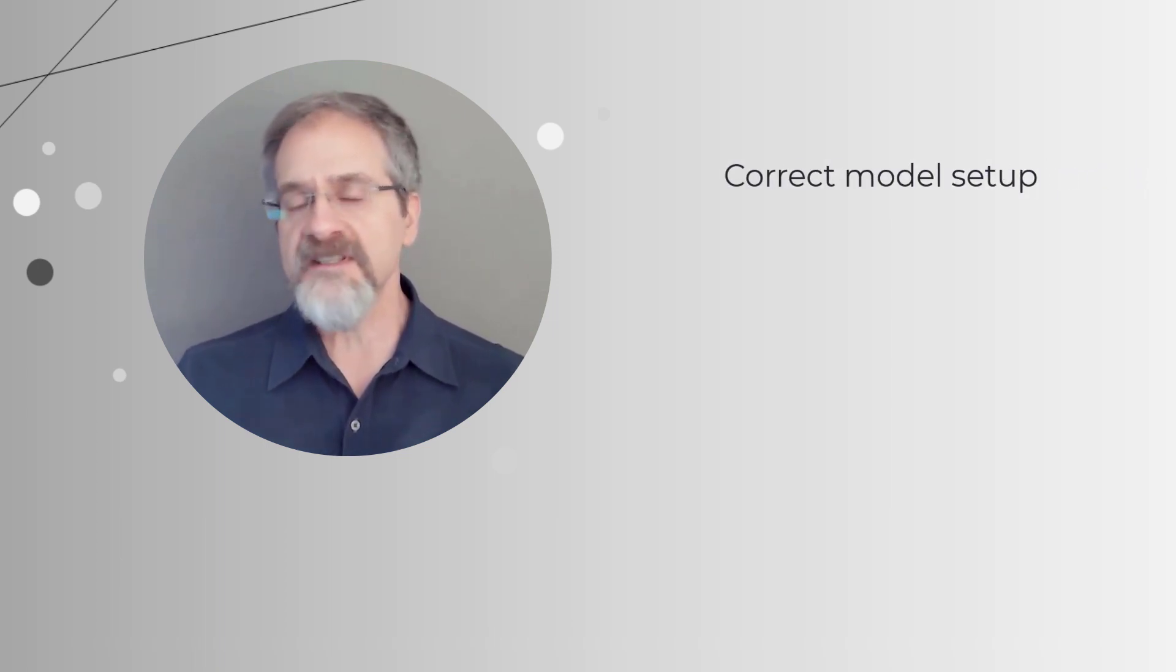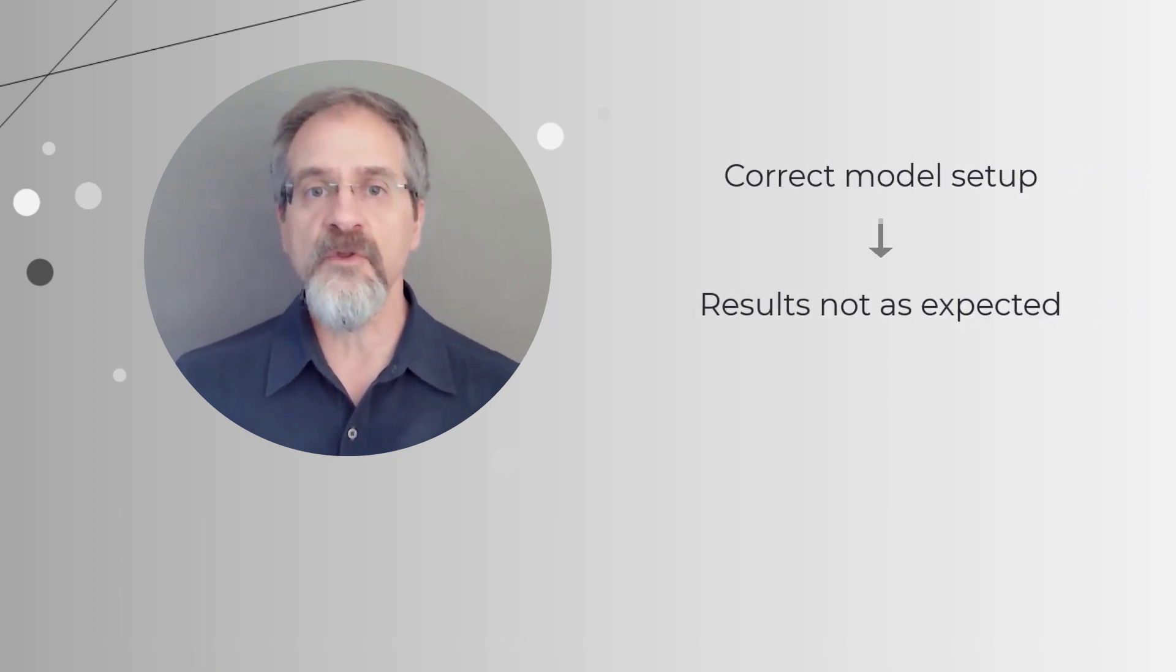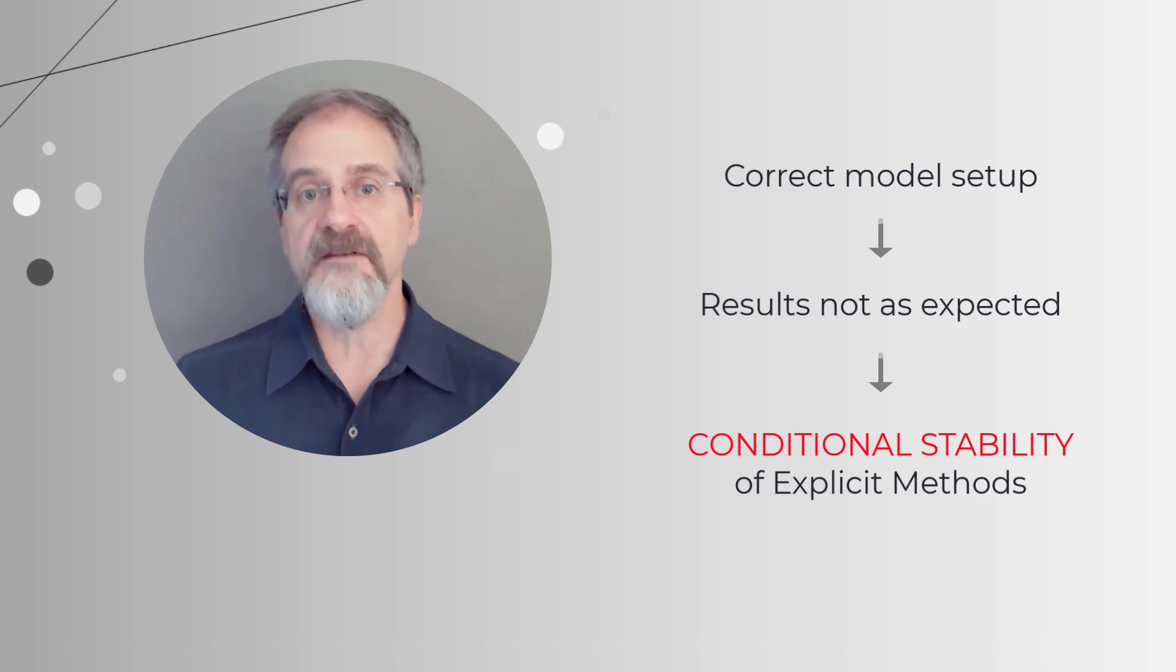When using an explicit method, you may have come across cases where you set up the model correctly, but somehow the results don't seem to agree with what you would expect intuitively. The reason in such cases may be the conditional stability of explicit methods.